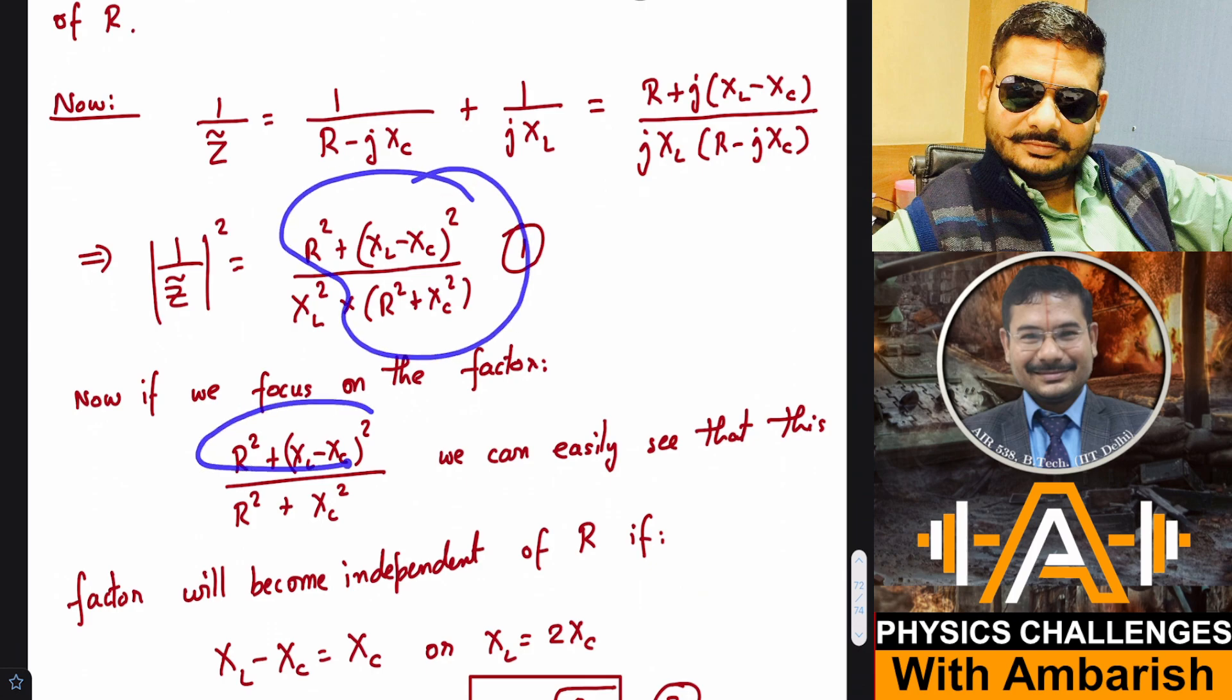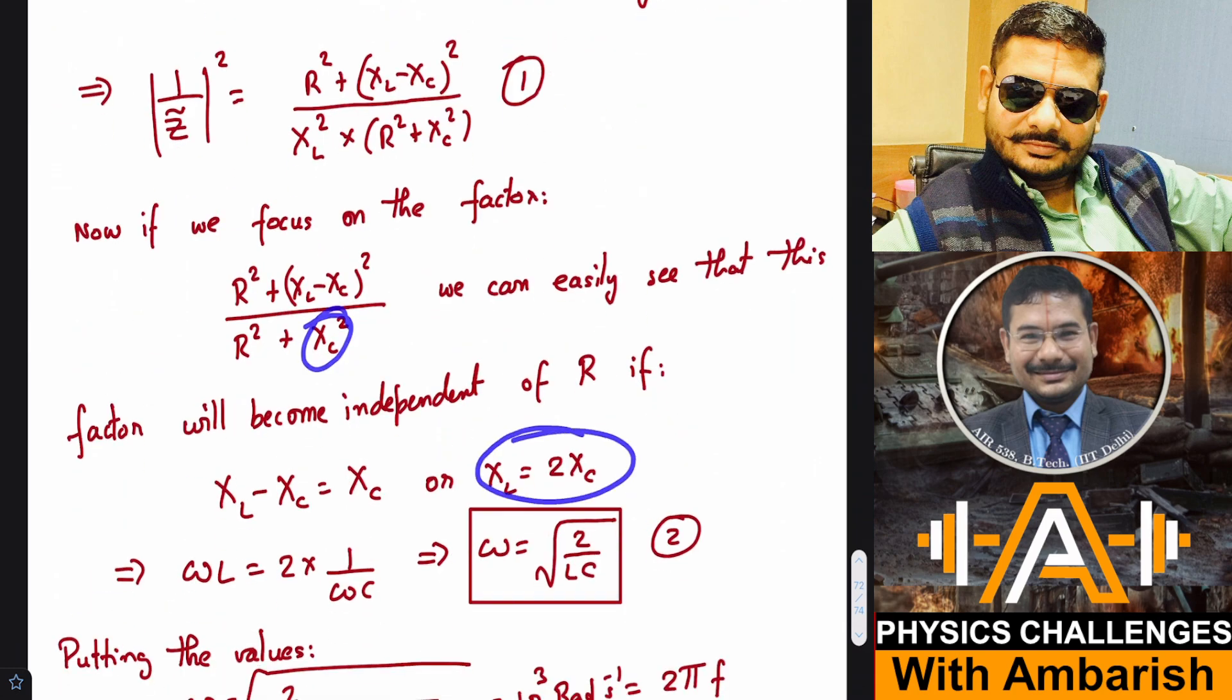That only means that the term in this circle and these two terms should be equal. We can easily see that this factor will become independent of R if XL minus XC equals XC, or we can say XL equals 2XC. Now XL is omega L and XC is 1 by omega C. So omega L equals 2 by omega C. That gives us omega is the square root of 2 by LC.